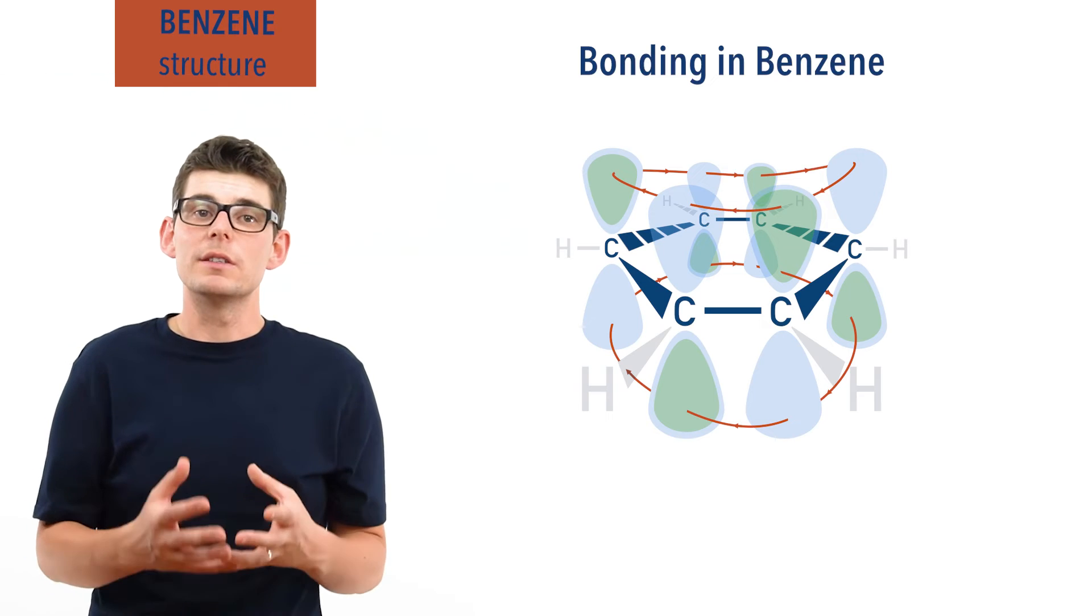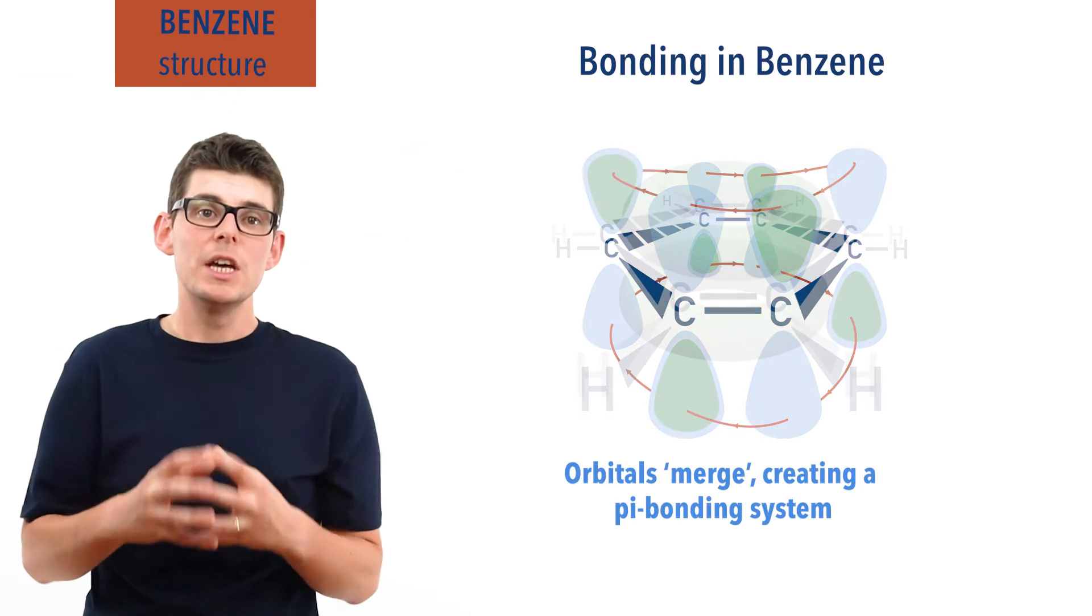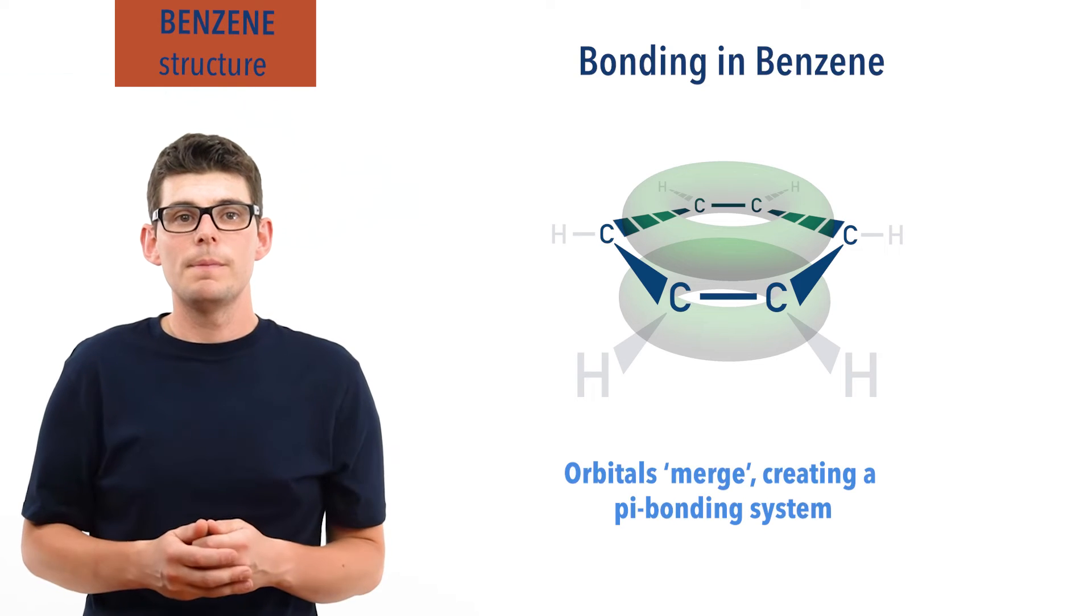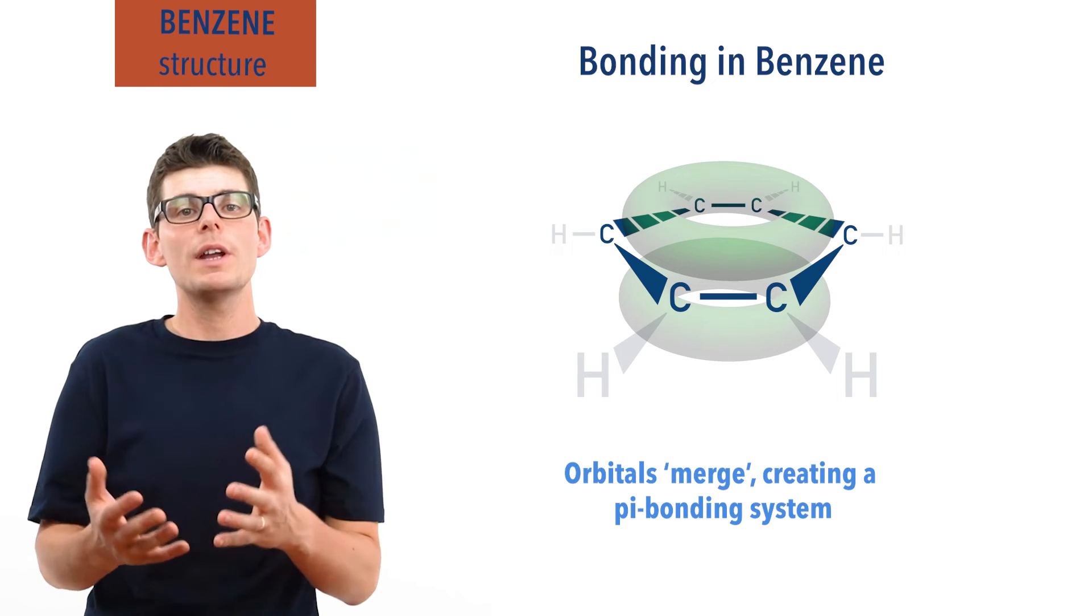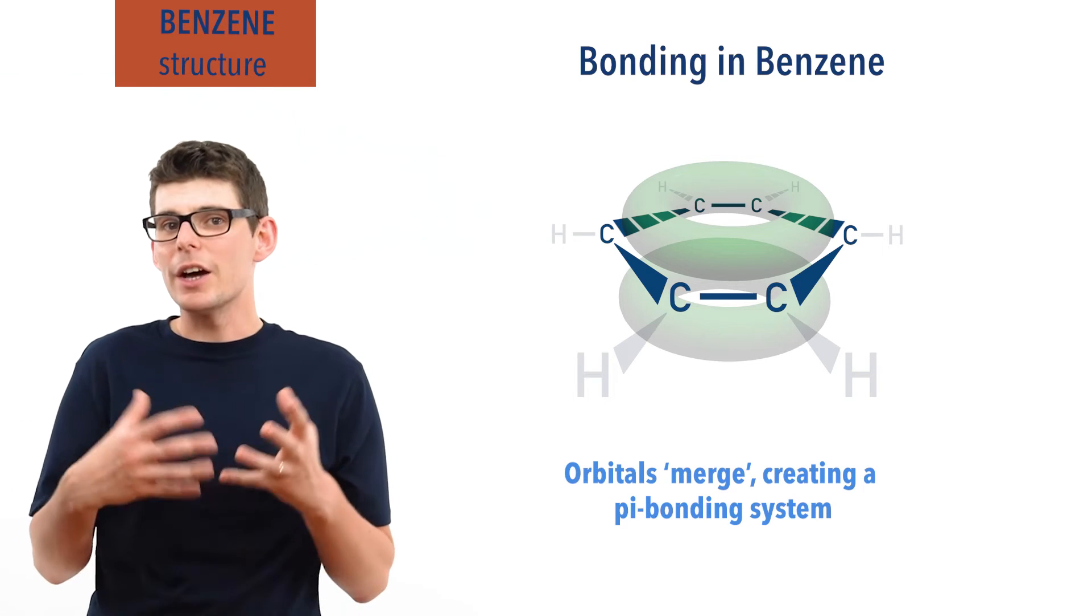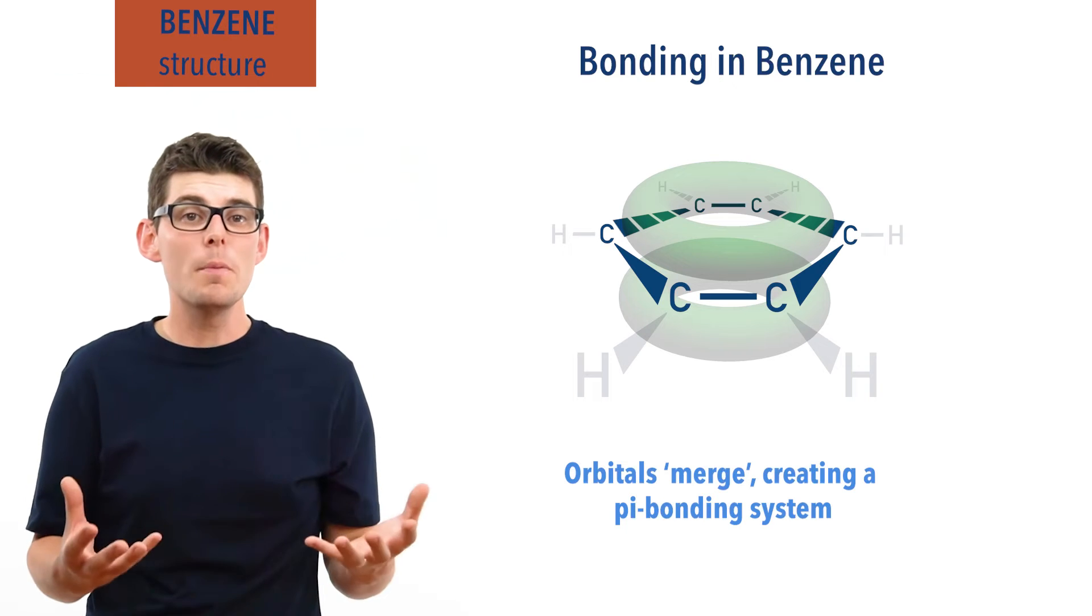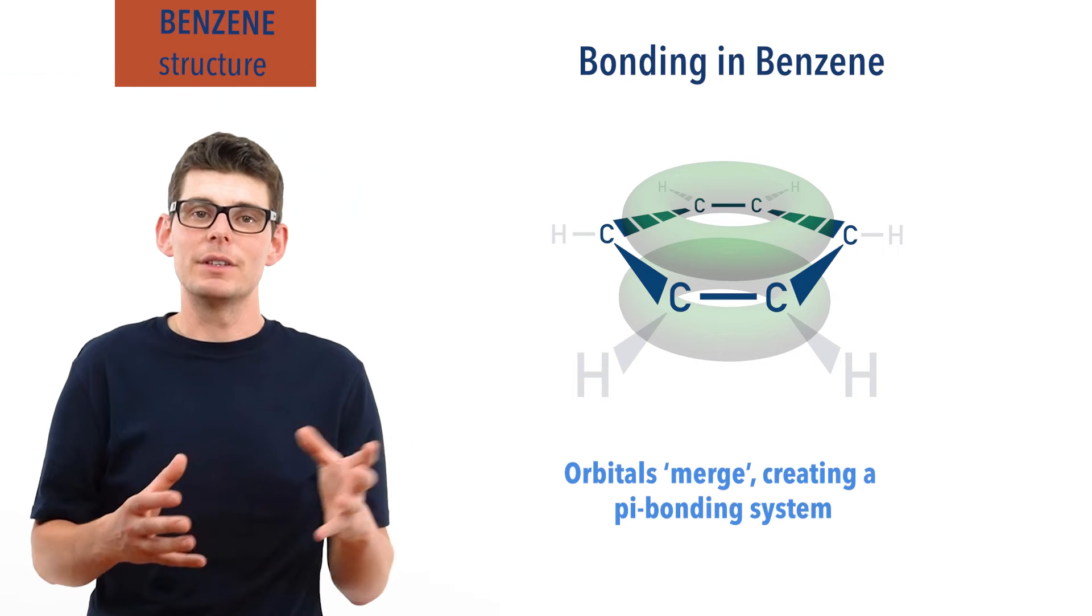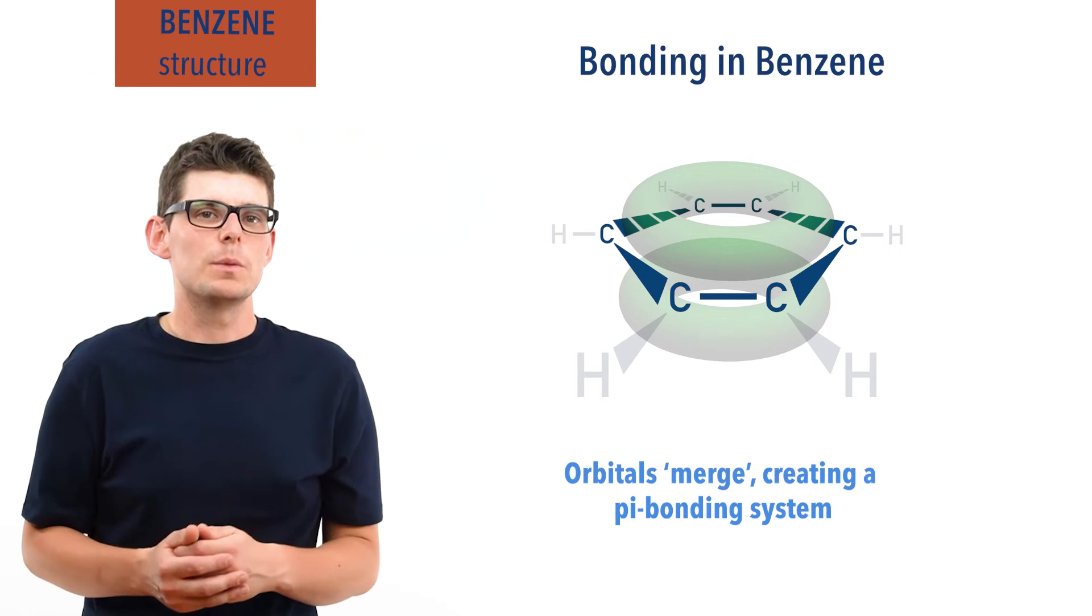You can kind of think of this as like the p-orbitals merging to create a larger area where the electrons can be and move around. One area above and one area below the carbon ring or plane. Technically, I should point out that there are actually things called molecular orbitals being formed here, but molecular orbital theory isn't directly covered at this level, so we can think of it in this way.